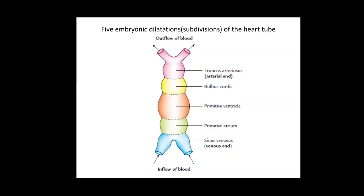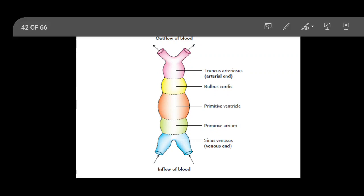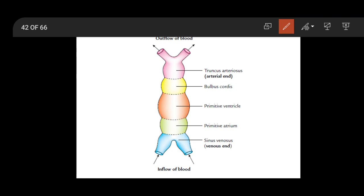Good morning everyone. Today I am discussing the development of the interatrial septum. First, about the heart tube: from below upward we have sinus venosus, then primitive atrium, primitive ventricle, bulbus cordis, and the distal part called truncus arteriosus. The junction of the primitive atrium and sinus venosus has the sinoatrial orifice, and the junction of the primitive ventricle and primitive atrium is called the AV canal — the atrioventricular canal.